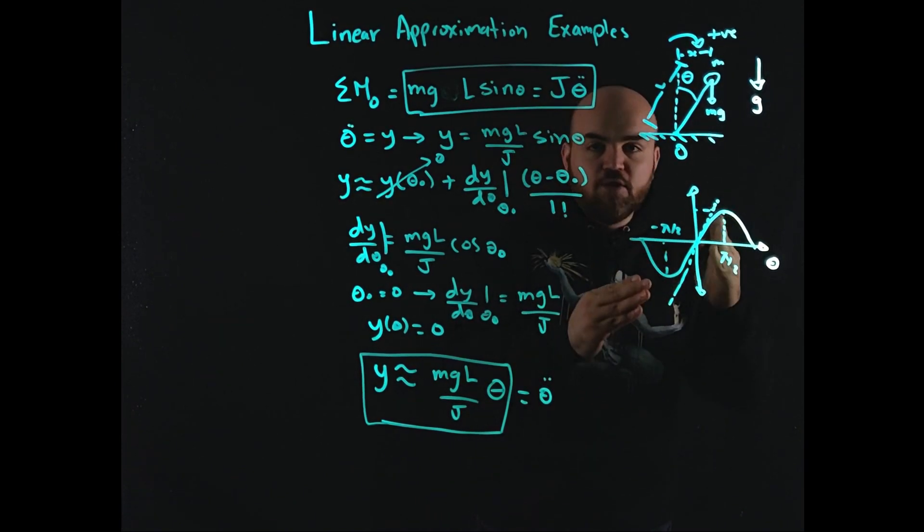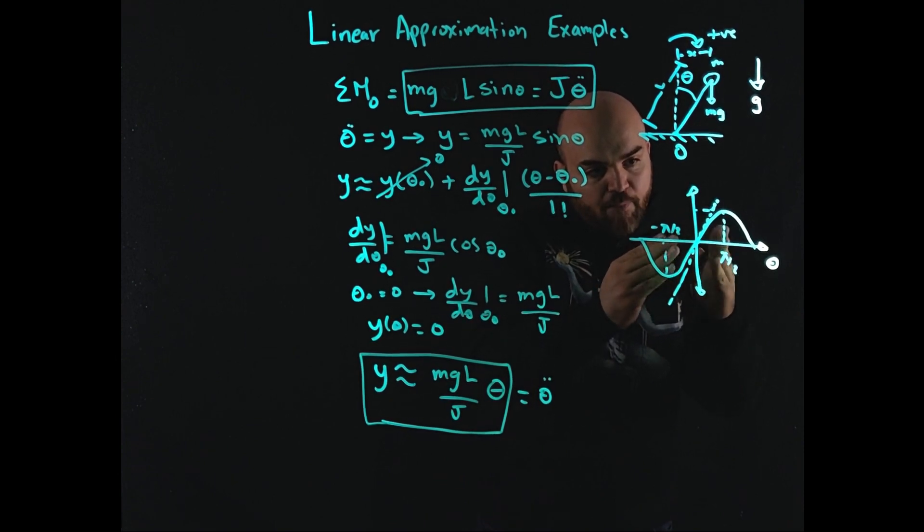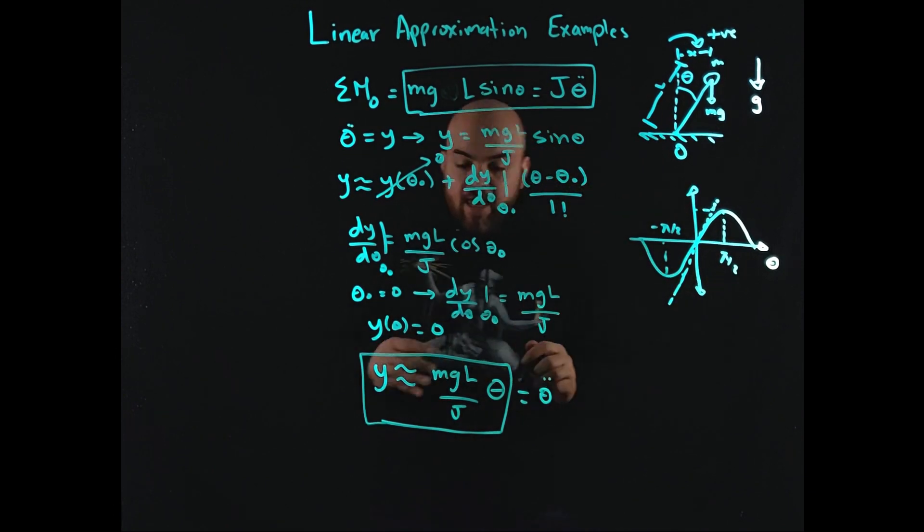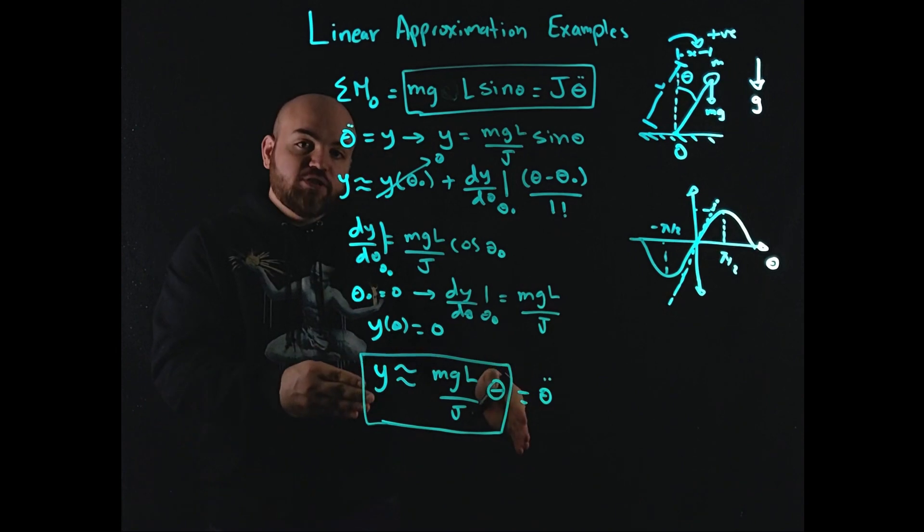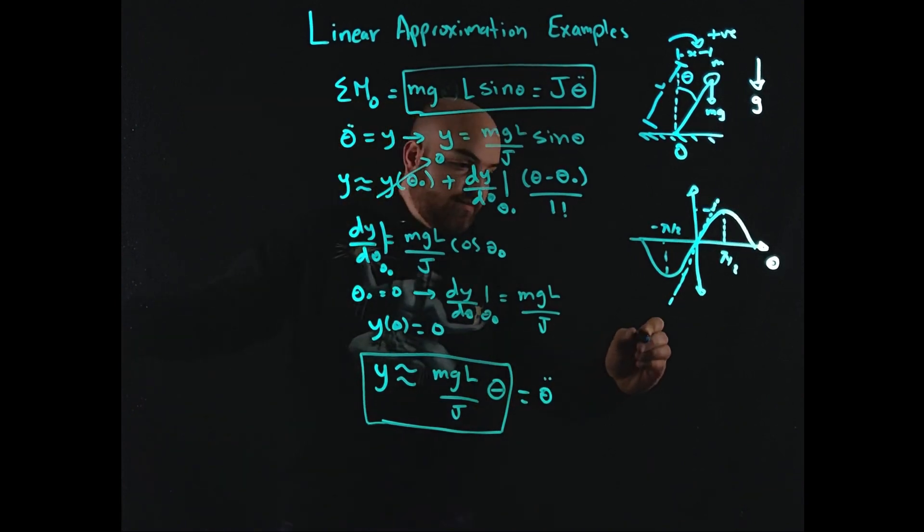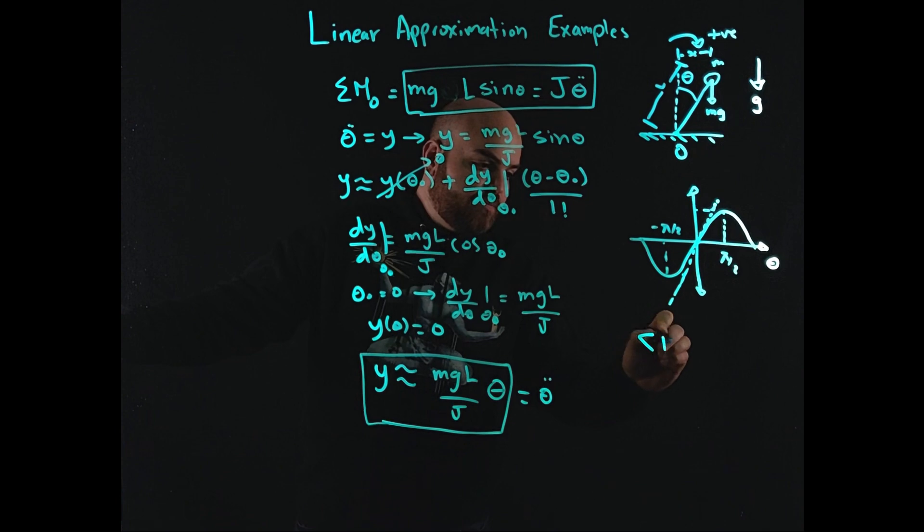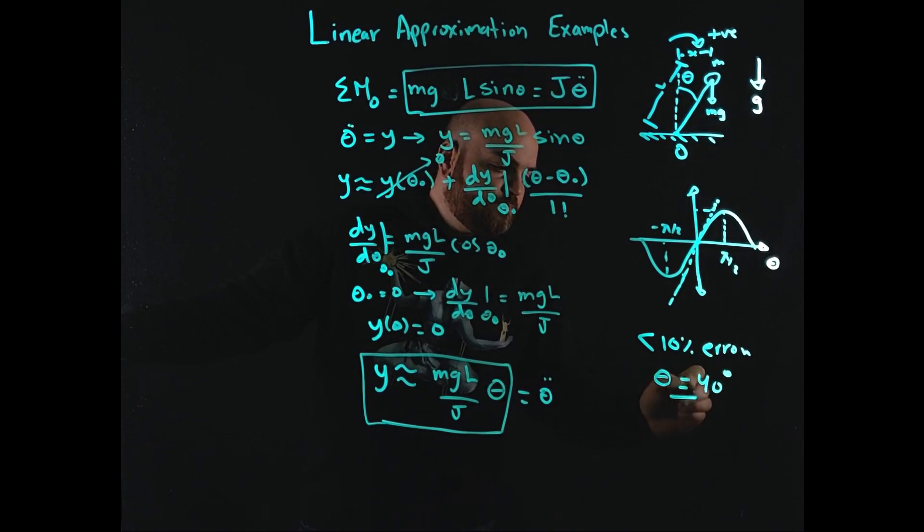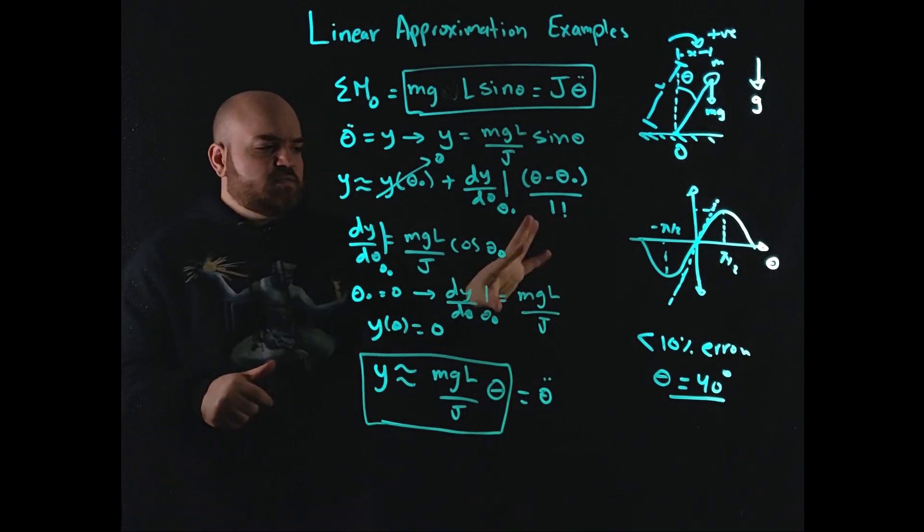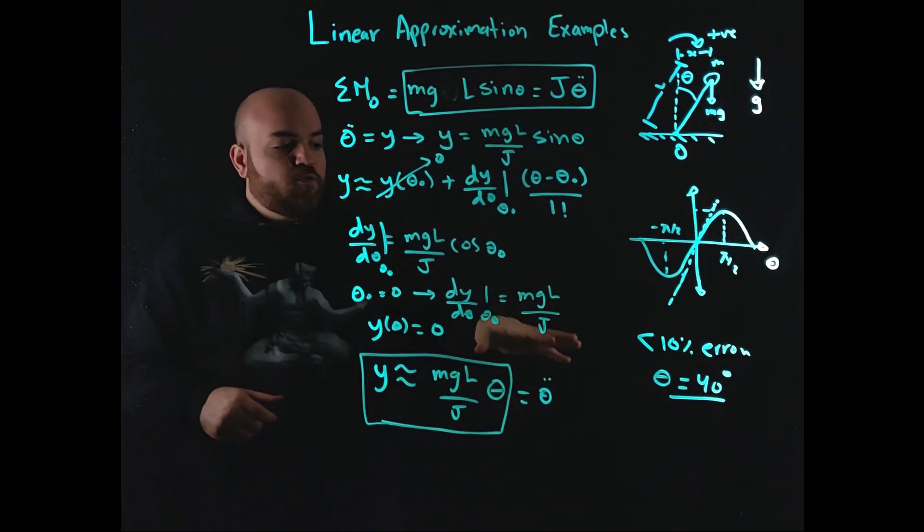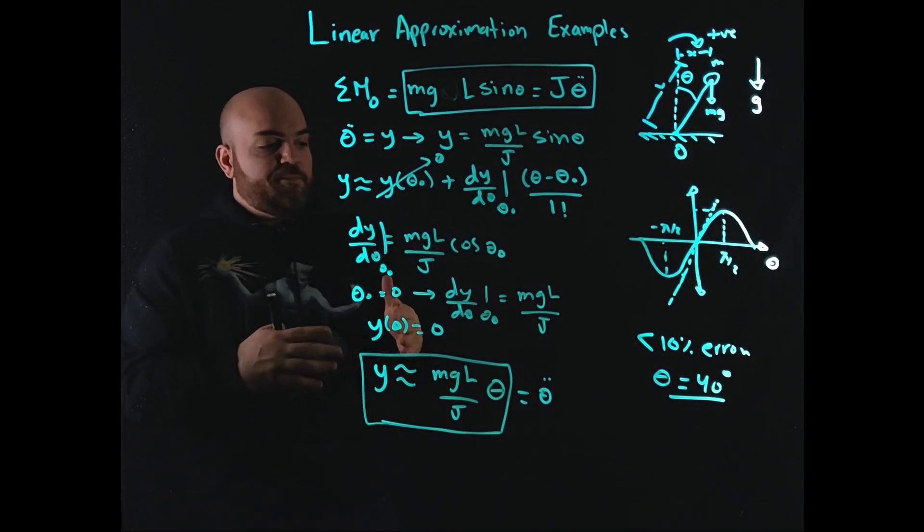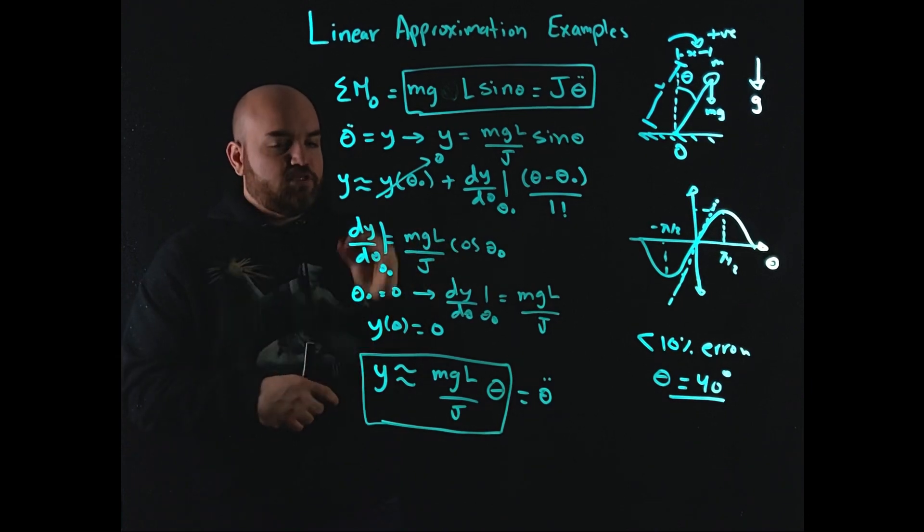And remember, when we linearly approximate a nonlinear function, the more we deviate from our operating point, the larger error that we incur in our approximation. And I can tell you that for an approximation like this, we can get up to about less than 10% error going up to a theta equal to 40 degrees. And that's not bad, right? It's around 8% error or 7% error for a theta of 40 degrees or less, right? Of course, the smaller we go back to zero, there's no error at zero because we're approximating it at that point.